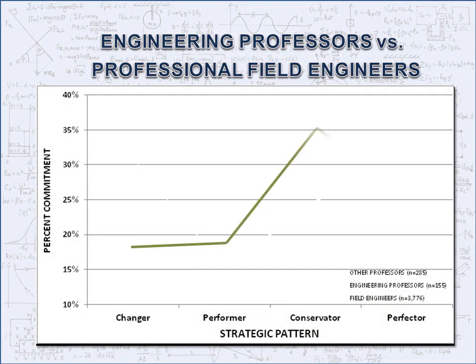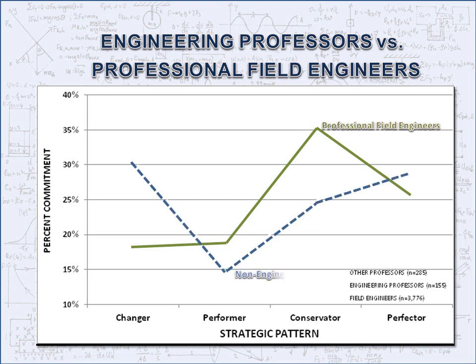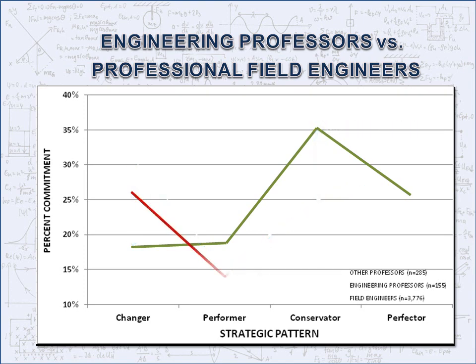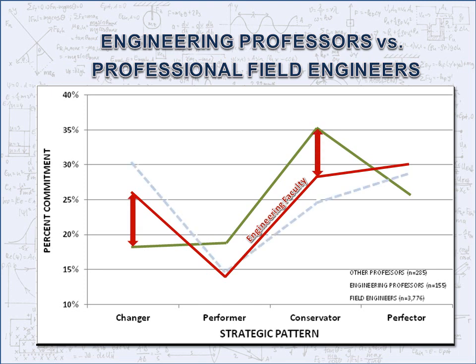This is the strength profile of the behavioral patterns of 3,700 field engineers from all levels, from professional to VP. And this is the profile of the non-engineering professors. The differences are substantial. And this is the pattern profile of the engineering faculty — it is a lot closer to the patterns used in the field. And this proximity matters. A lot.